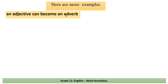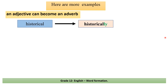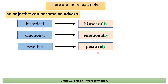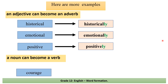More examples. An adjective can become an adverb. 'Historical' → 'historically': we add '-ly'. 'Emotional' → 'emotionally': add '-ly'. 'Positive' → 'positively': add '-ly'. Or a noun can become a verb — for example, 'carriage': we add the prefix 'en-' to get 'encourage'.